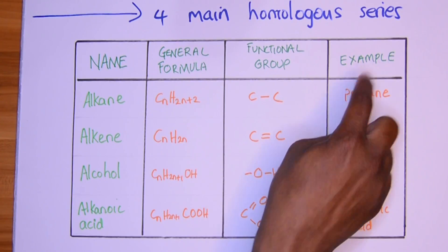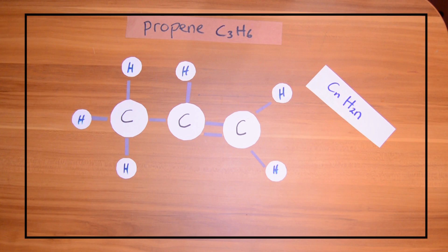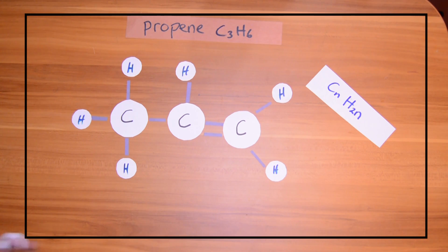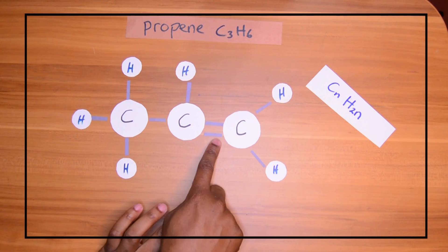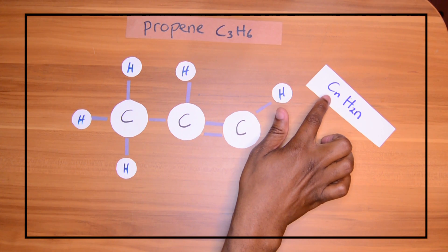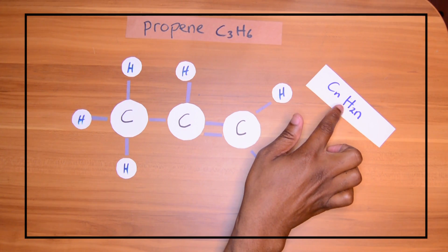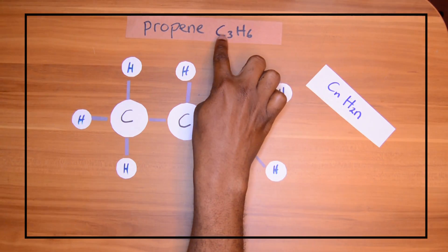We have propene. Remember the two H's that were here in the propane? We lost them because the double bond was like, 'Later, fellas,' and then joined up here. So we lost two hydrogens, and now that's why the general formula of alkenes is CnH2n. So there's just twice the amount of hydrogens as their carbons: C3H6.